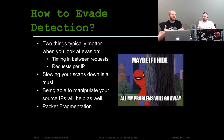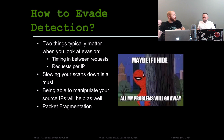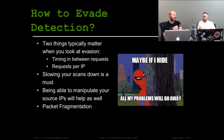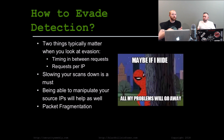So how do we go about evading detection? When looking externally at a network, the two main things to keep in mind are timing in between requests — how long does it take for each request to happen — and requests per IP. Because a lot of times you're detecting a single IP against multiple hosts or a single IP sending multiple requests to a single system. Those detection mechanisms are typically looking at a certain period of time, like 100 requests in a minute or 50 requests in 30 seconds. So being able to slow your scan down is, first of all, a must.